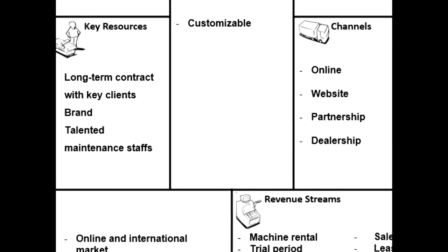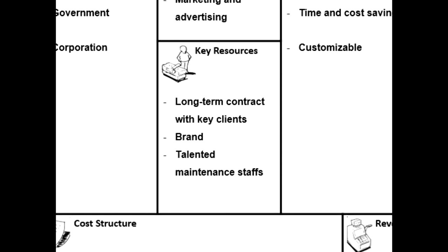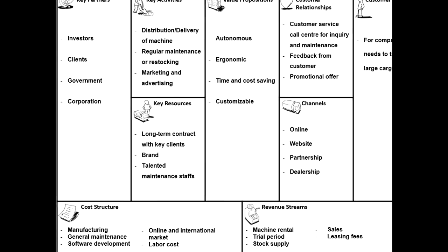The last block for my part is key resources, which describes the most important assets needed to make a business model work. To create this block, we ask: what key resources do our value propositions require? What about our distribution channels, customer relationships, and revenue streams? For the PickUpper, the key resources are long-term contracts with key clients, branding, and hiring talented maintenance staff. Thank you very much.